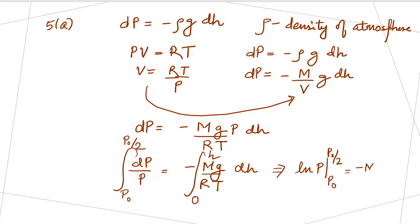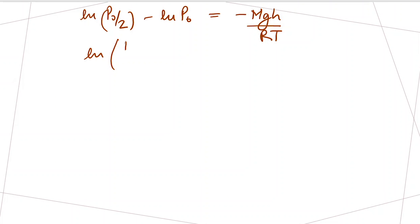This integration becomes log P from P naught to P naught over 2, and this is minus mg over RT times h. Let's put the limit, so we get log P naught over 2 minus log P naught equals minus mg h over RT.